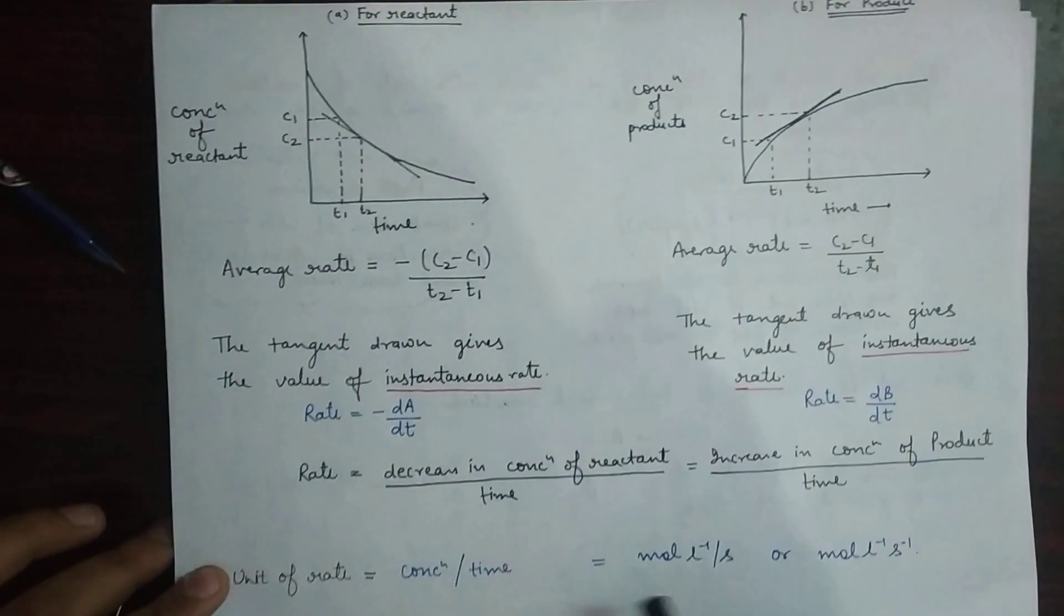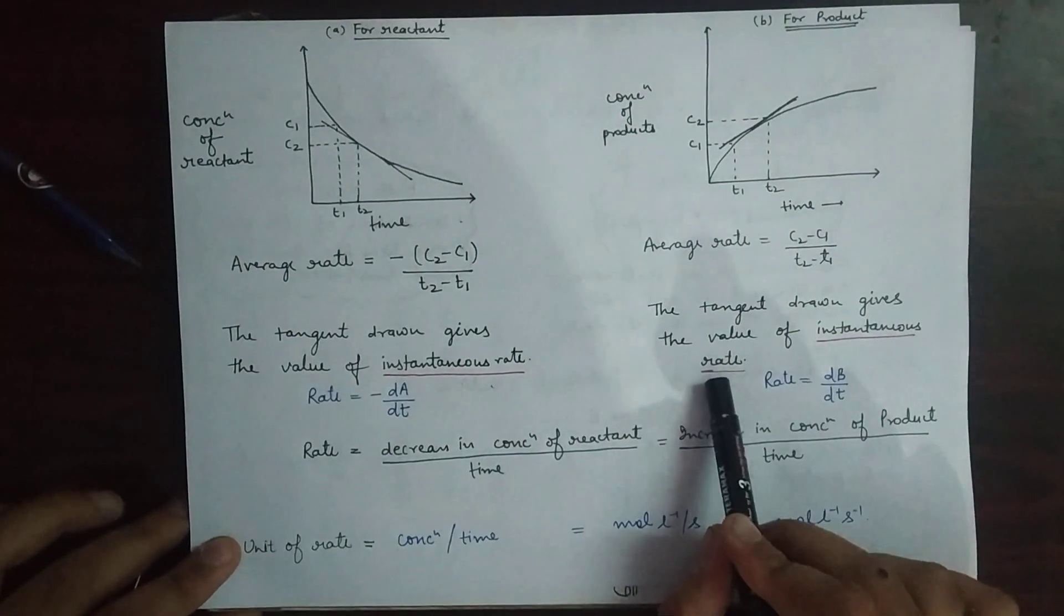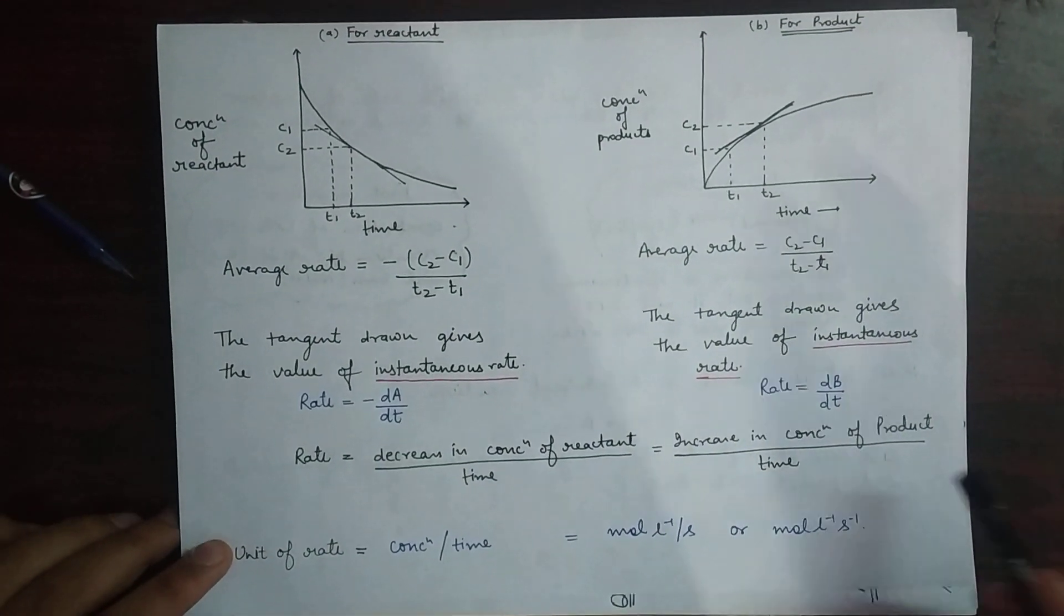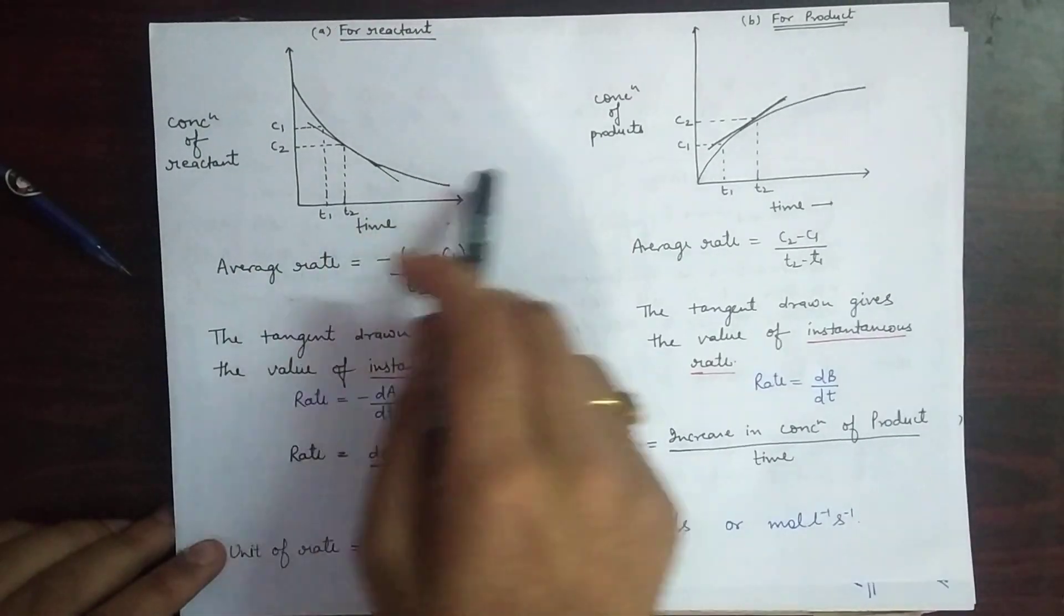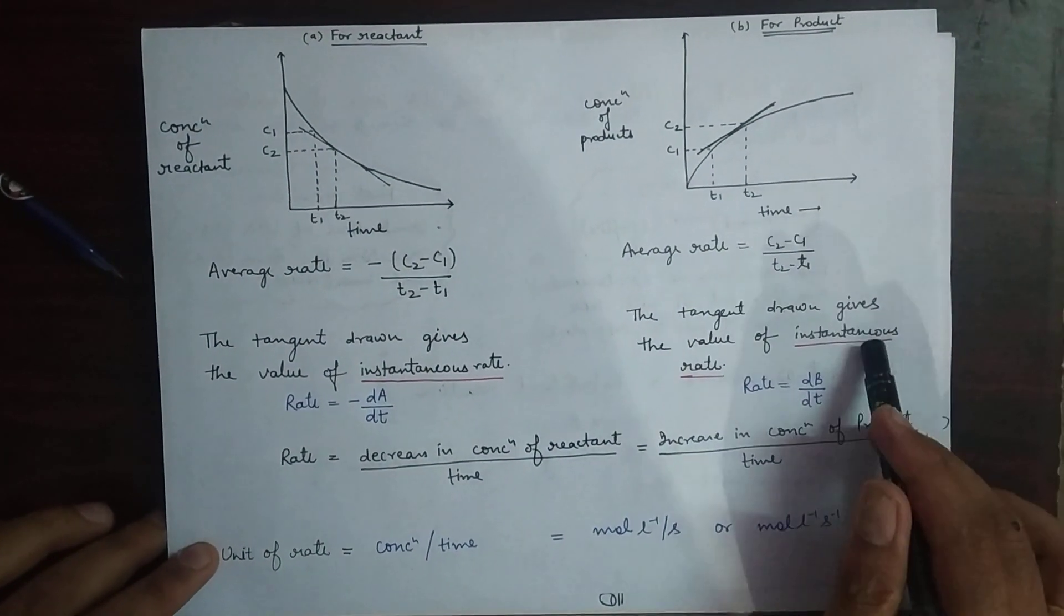This particular point gives me the value of instantaneous rate, which is quite effective. Because for the average rate I can take any value—it is going to give me the average result—but instantaneous rate is going to give me the most effective and accurate value of rate.